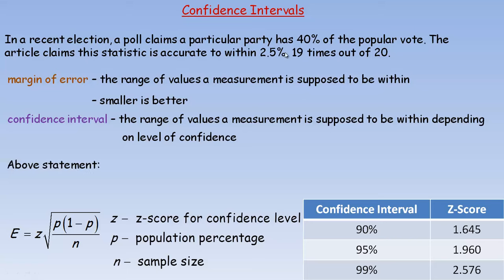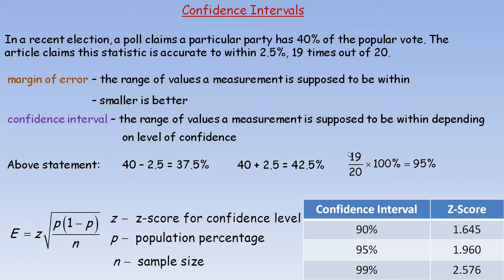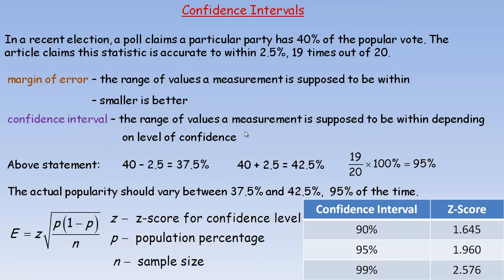Now what this above statement actually means is this. If you take this 40% and it says within 2.5%, so if you subtract 2.5% and add 2.5% to 40, and 19 times out of 20 — 19 divided by 20 times 100 is 95% — it actually means that the popularity should vary between 37.5% and 42.5%, 95% of the time. It's not saying it's exactly 40; it's between 37.5% and 42.5%, 95% of the time.